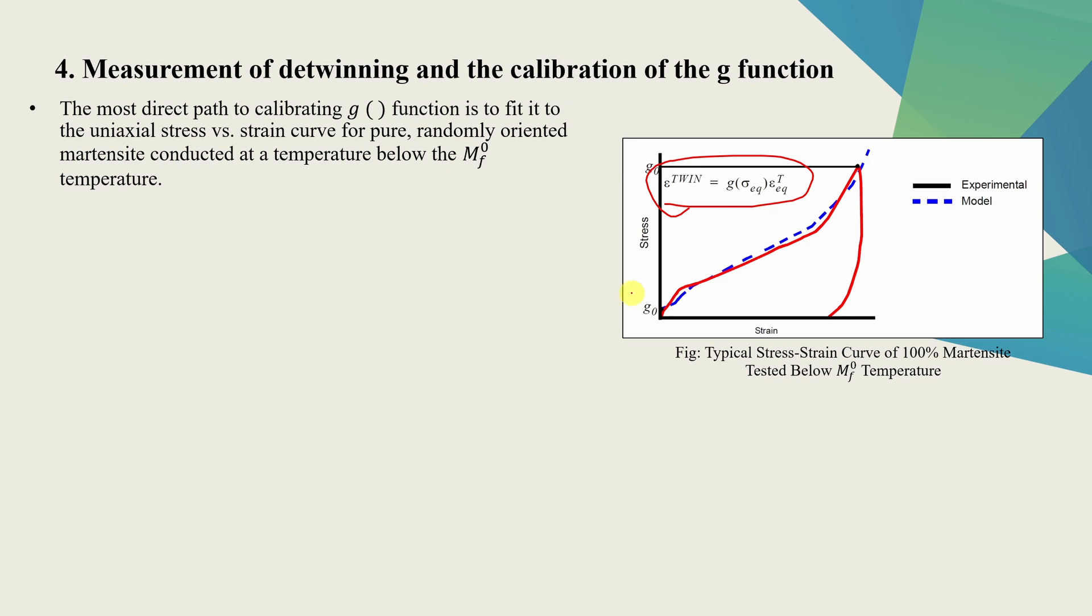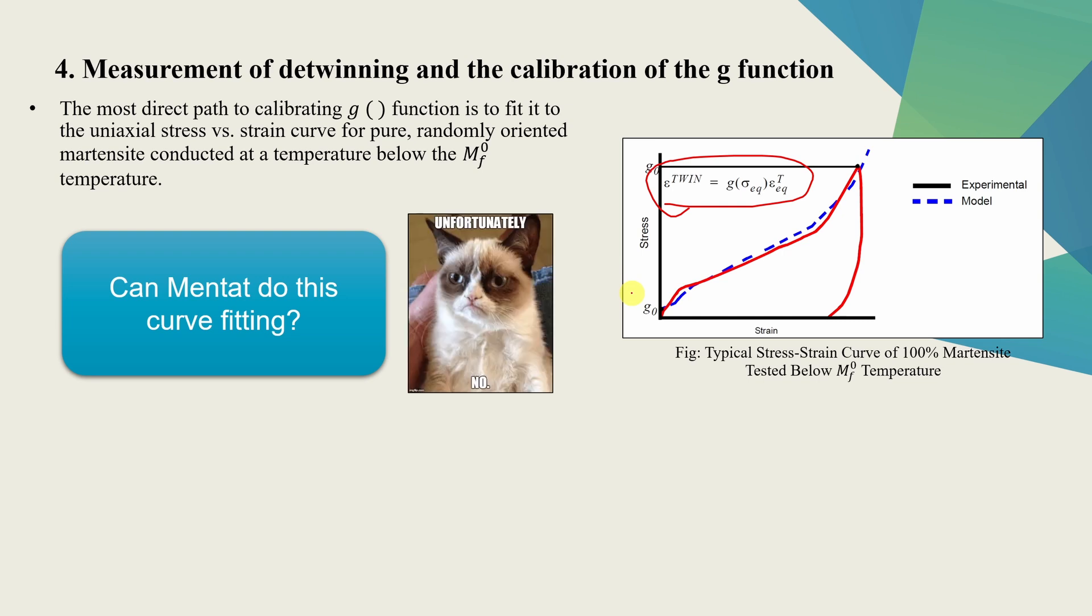Now one good question which can be asked here is, can Mentat do this? Like if you have this experimental curve, can you just directly give it to Mentat and Mentat will spit out those parameters? Unfortunately, at this point, answer is no. So you have to do it by your own and then enter those parameters in Mentat. But hopefully in future, maybe it will be included.